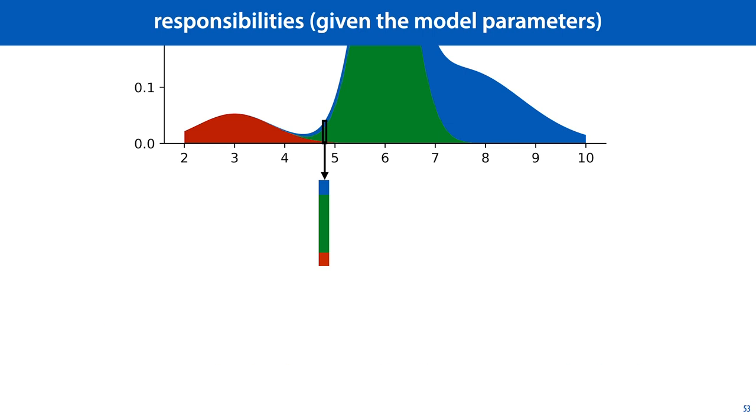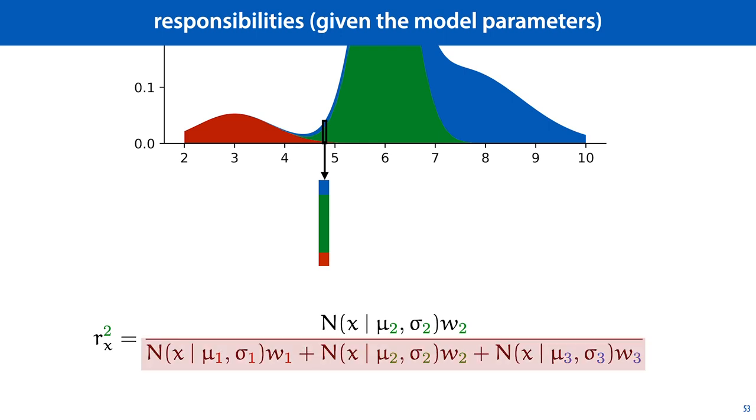In formulaic terms, that looks like this. We look at the sum of the three densities multiplied by their weights, which gives us the total density, and the proportion of that sum that the second component is responsible for is the responsibility we assign to the second component for having generated this point. If you allow subjective probability, this is just Bayes' rule in action. The probability of component 2 being responsible given that we've observed X. If you want a purely frequentist interpretation of the EM algorithm, you have to be strict in calling these responsibilities and not probabilities.